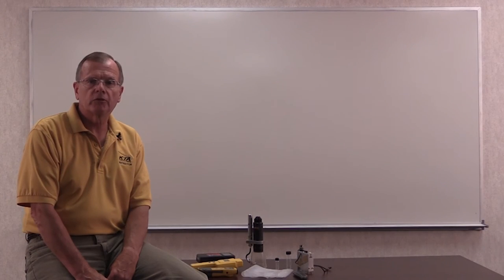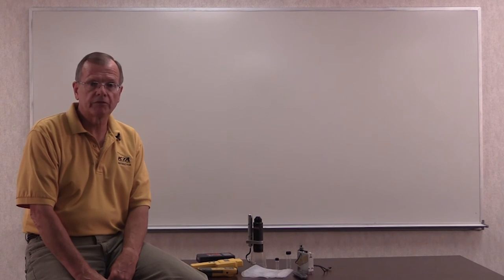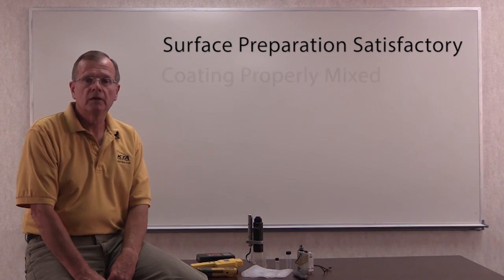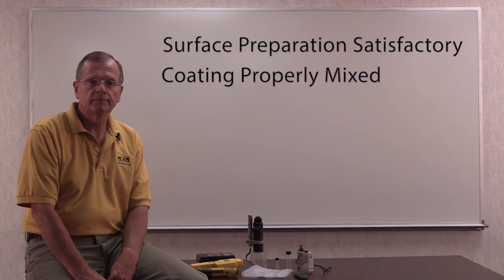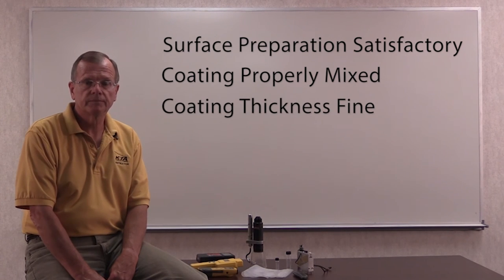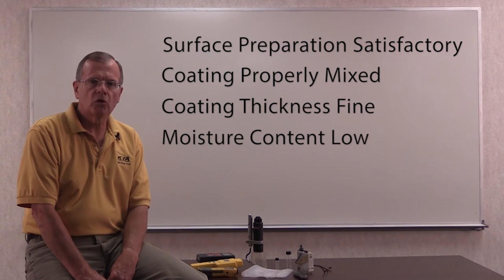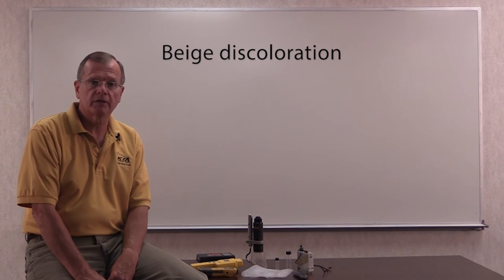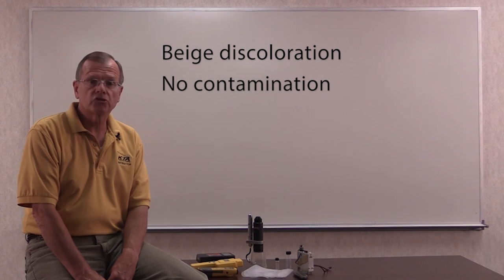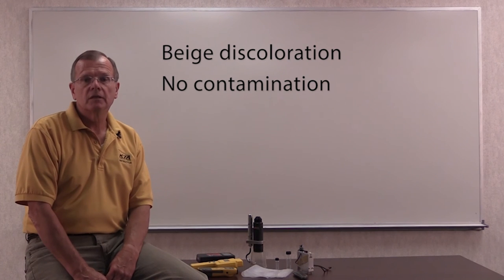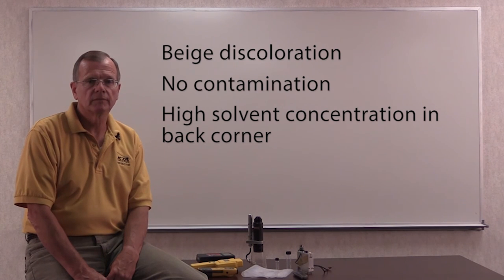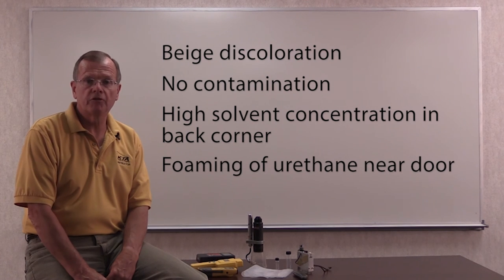The laboratory findings were provided to the field investigator who issued a report with the following observations. Preparation of the existing coating was satisfactory. The new coating was mixed properly. The thickness of the new coating was acceptable. The moisture content of the slab was low and was not a problem. The failure was between the clear urethane and the beige epoxy. A beige discoloration was present on the backside of the urethane. There was no contamination between coats. The failing samples from the back corner of the room contained high concentrations of solvents from the epoxy. The failing samples near the door exhibited foaming of the urethane.